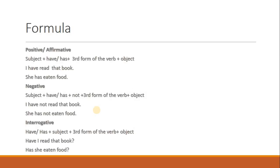Before I tell you when to use Present Perfect Tense, it would be better that we look at the formula. To form a positive sentence, we need: subject + have or has + third form of the verb + object. To form a negative sentence, we need: subject + have/has + not + third form of the verb + object.